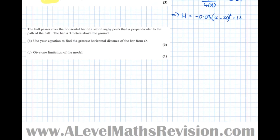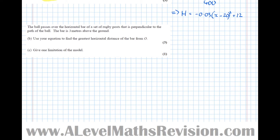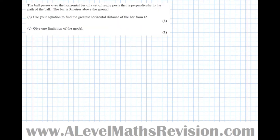So now for the next part. It says the ball passes over the horizontal bar of a set of rugby posts that is perpendicular to the path of the ball. The bar is 3 metres above the ground. So the best way to do this is to draw a diagram.